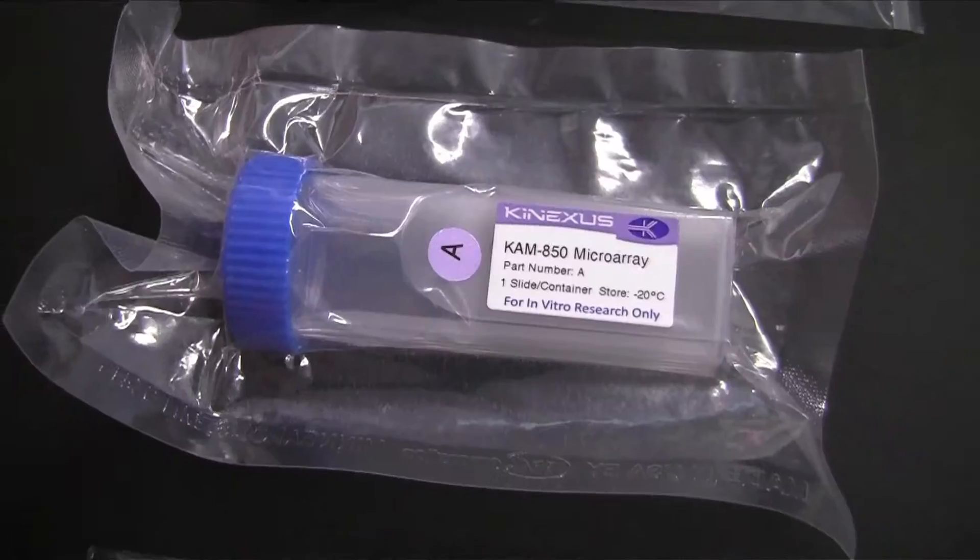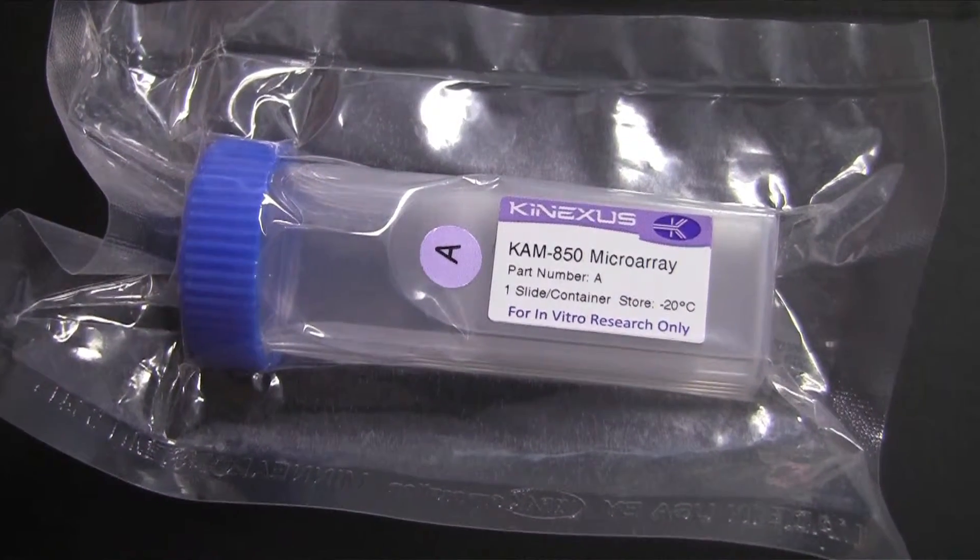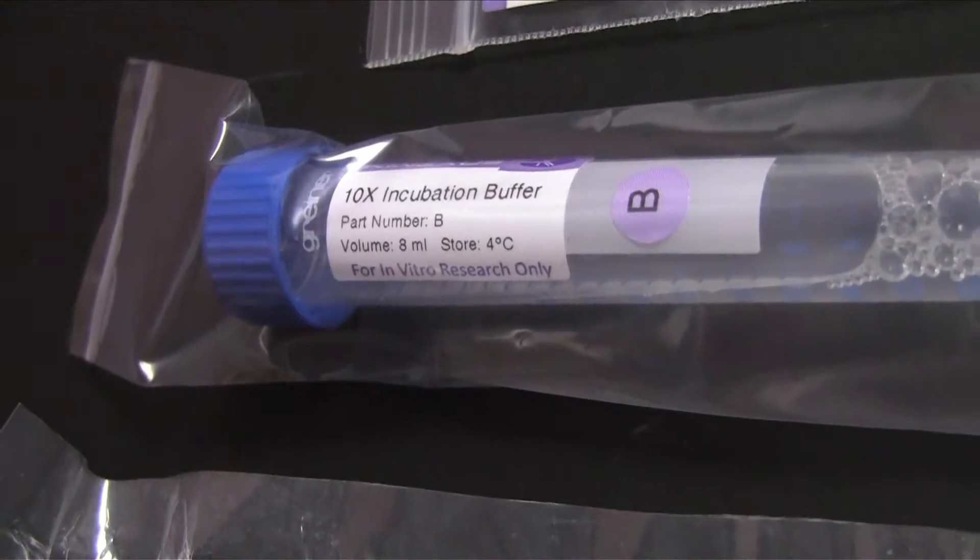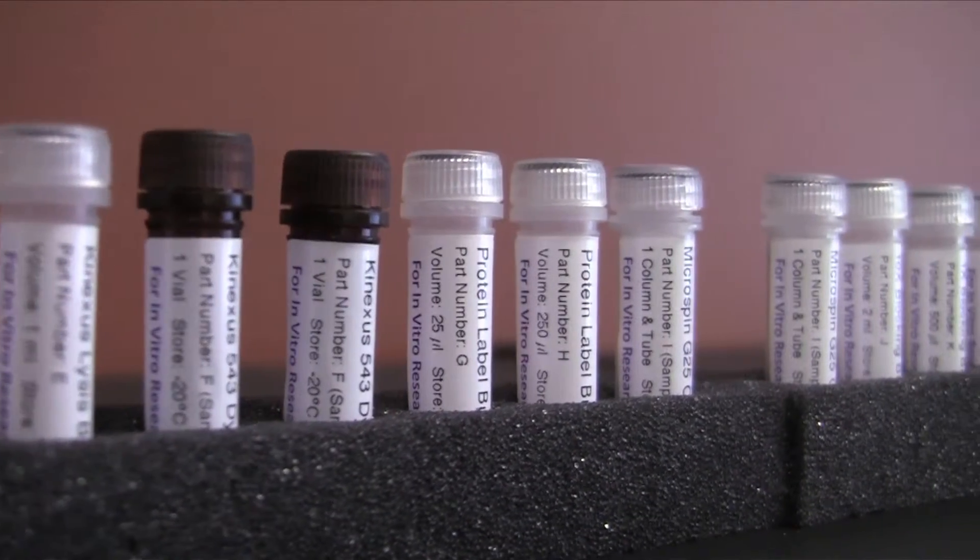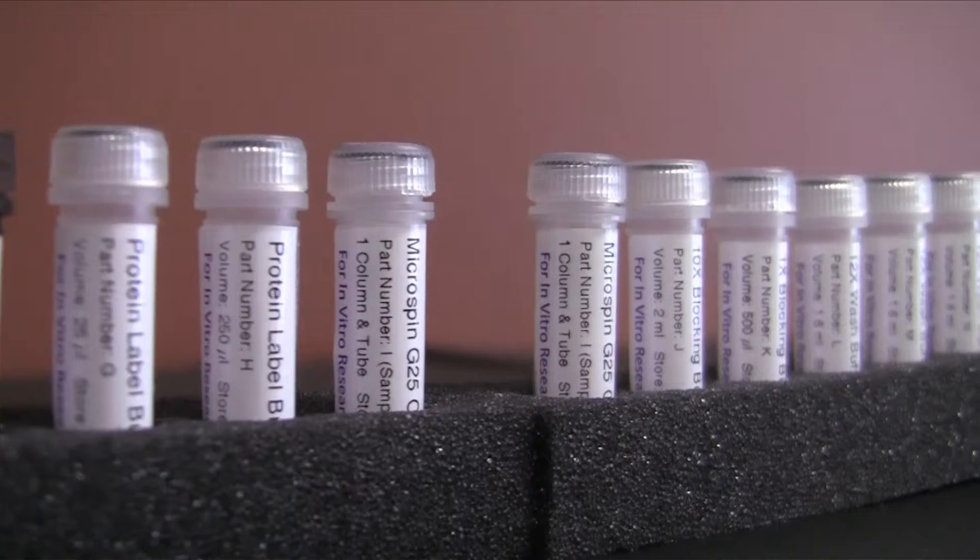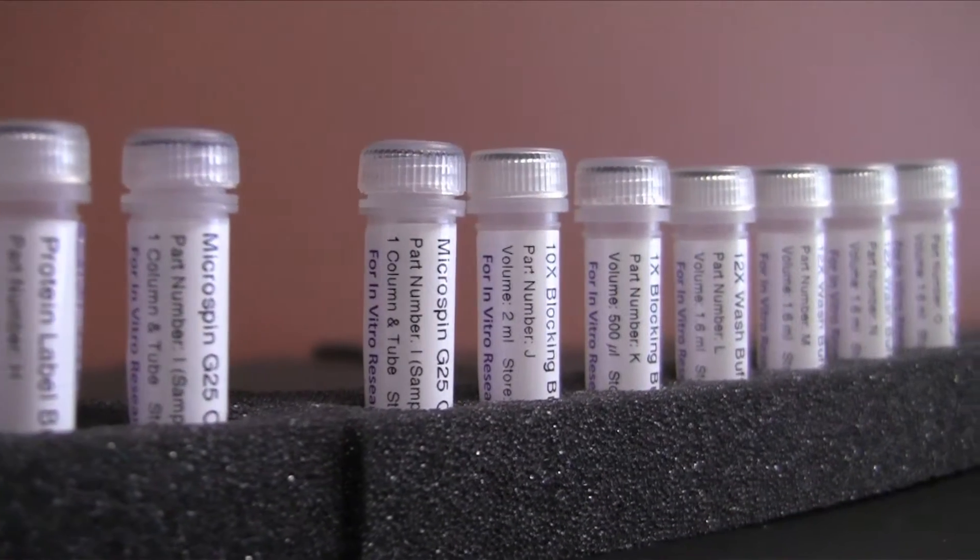These include the vacuum sealed CAM850 antibody microarray labeled with the letter A and the two fluorescent dyes labeled F which are stored in the dark colored vials. All of the other items can be stored at 4 degrees.